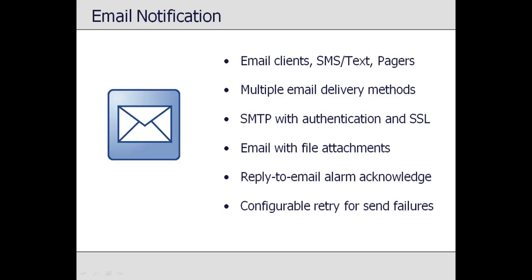Top View supports multiple methods of email delivery. Most users will send email through an SMTP mail server, and Top View supports both authentication and secure connections using SSL. Each email notification message can attach one or two files — graphics, Top View reports, or any other file visible from the Top View machine. Top View supports two-way email communication, allowing users to reply to notification messages to acknowledge the alarm. In the case of network or SMTP mail server problems, Top View can retry email failures at a configurable interval to ensure delivery.